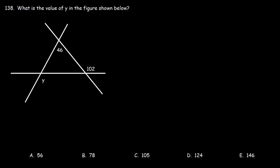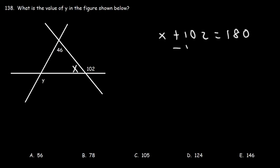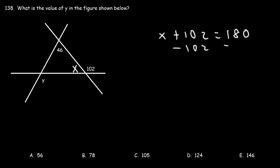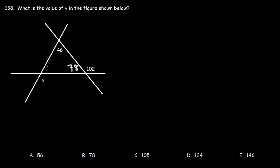Number 138: What is the value of y in the figure shown below? The first thing to notice is that two angles form a linear pair. Let's call one angle x; then x plus 102 equals 180. Subtracting 102 from both sides, x equals 78.